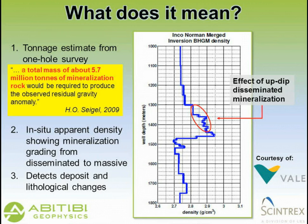The density profile done by an inversion program shows an increasing density. In other words, the disseminated part provides a lower density than the massive lower part. That's the sort of typical, classical borehole gravity response.